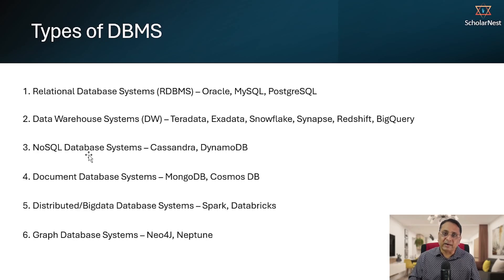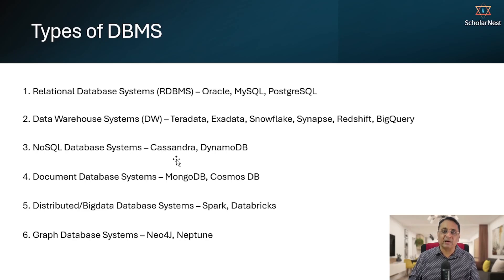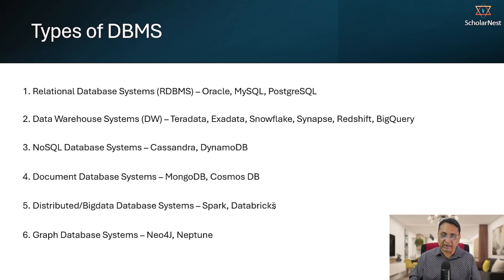The third category is NoSQL database systems. NoSQL looks like these databases do not support SQL, but that's not correct — NoSQL stands for 'not only SQL,' meaning you can use SQL plus other languages. Popular NoSQL databases are Cassandra and DynamoDB. The fourth category is document database systems, with popular names MongoDB and Cosmos DB. The fifth is distributed or big data database systems, with popular names Spark and Databricks.